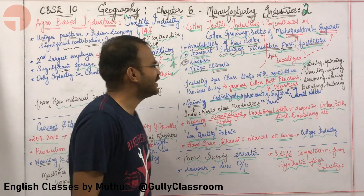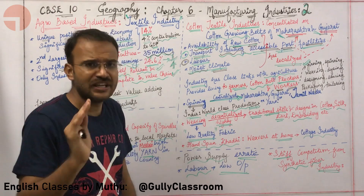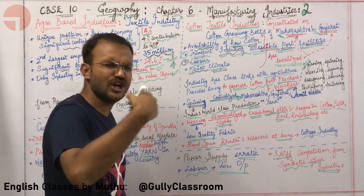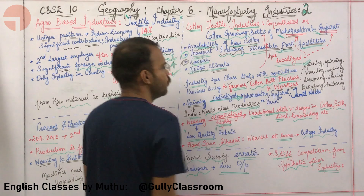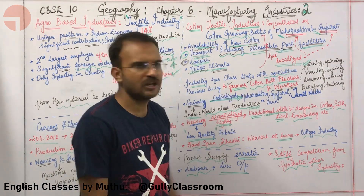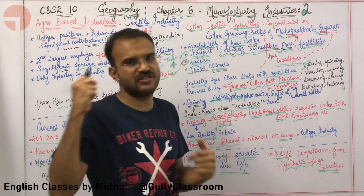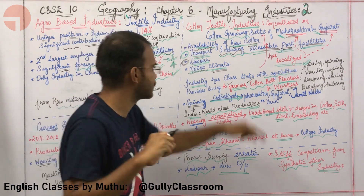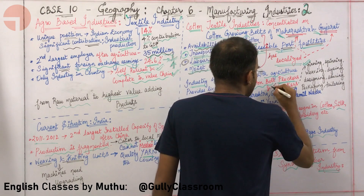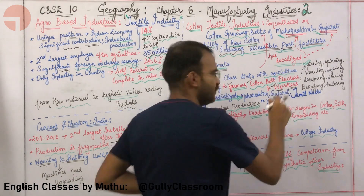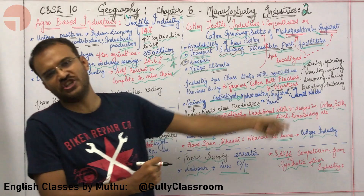The cotton industry has very close links with agriculture. It provides employment to a large number of people: farmers, cotton boll pluckers — people employed to harvest cotton from the plant — and workers in ginning, spinning, weaving, dyeing, designing, tailoring, sewing, and packaging industries.